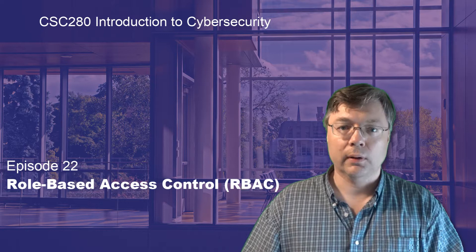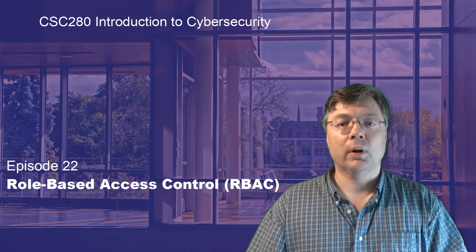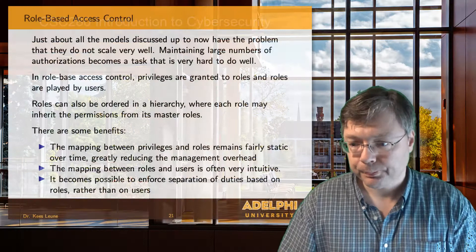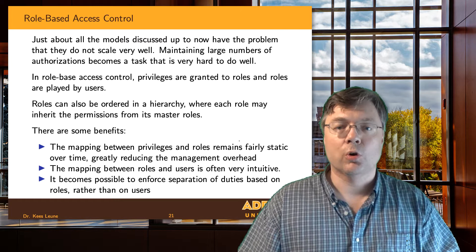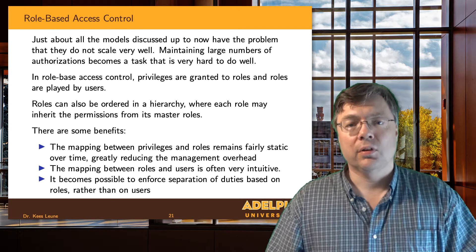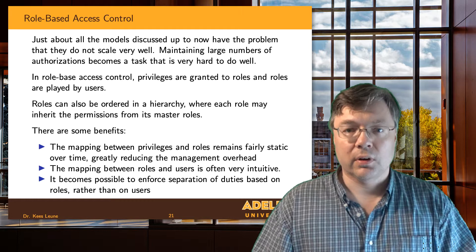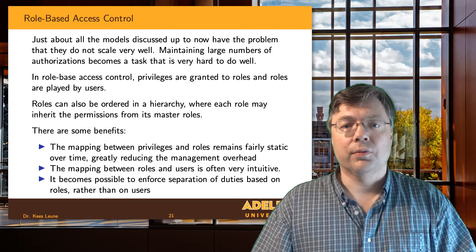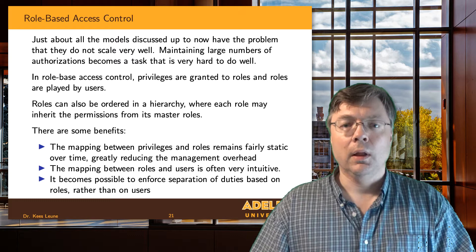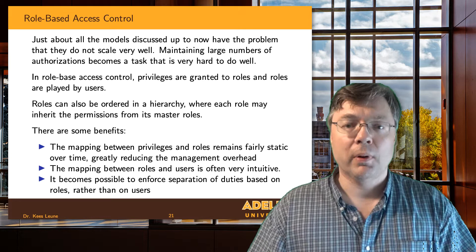Most current well-defined access control models are at least in part based on RBAC. What we've seen so far with both mandatory and discretionary access control is that overhead is a big issue. Systems grow a lot, there are many different states in which a system can reside, and it's often difficult to identify what permissions someone has or what permissions are defined on a particular object. Reducing this overhead is beneficial for transparency, and transparency and simplicity are friends of security. Complexity is the enemy of security. So what we're looking for is a model that is intuitive, simple, and that scales well — and role-based access control goes a long way into giving us that.